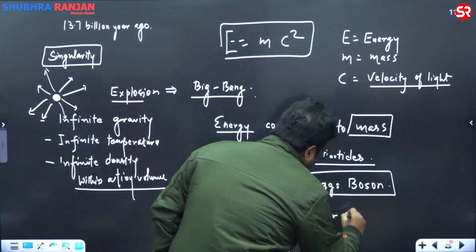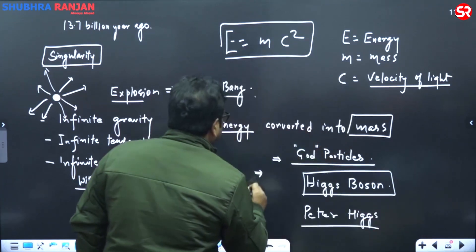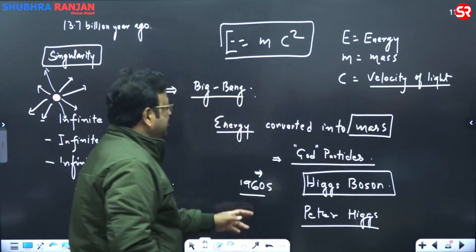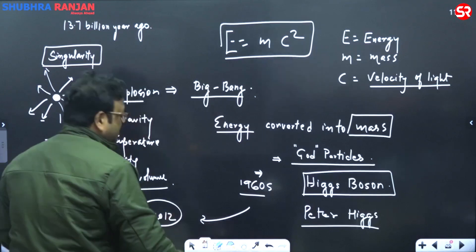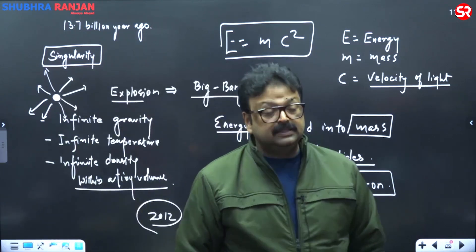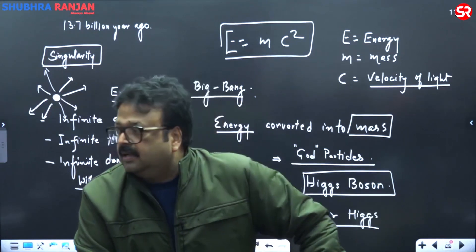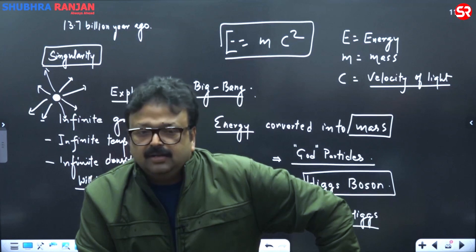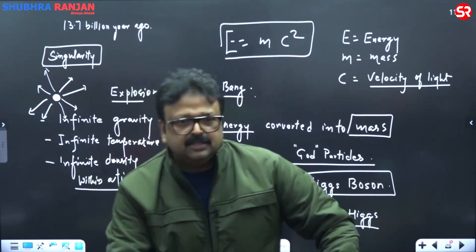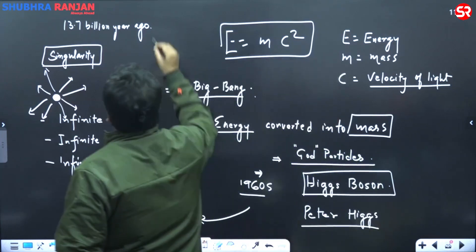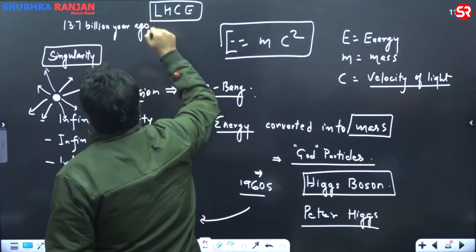Peter Higgs, and he gave this theory in 1960s, and in 2012, he was rewarded Nobel Prize of Physics. After there is an experiment, you all have this idea, large hadron collider experiment that is going on in France-Switzerland border, underground experiment. So LHC, these will be taught in your science and technology, that is why I am just touching it and telling you, large hadron collider experiment.